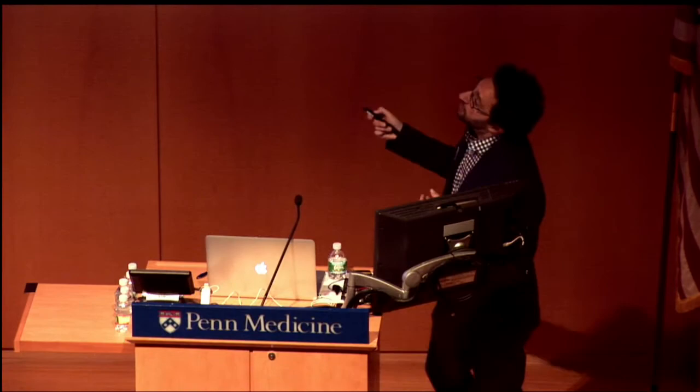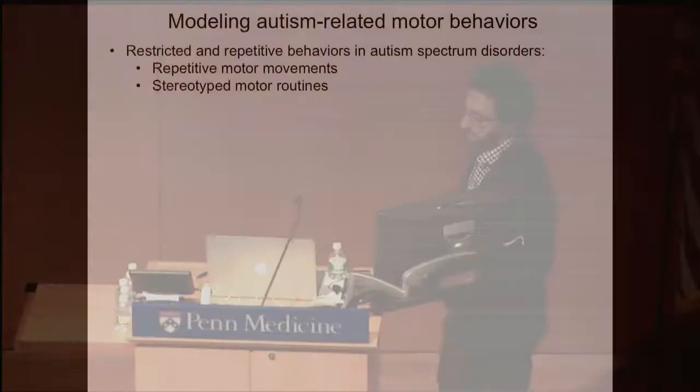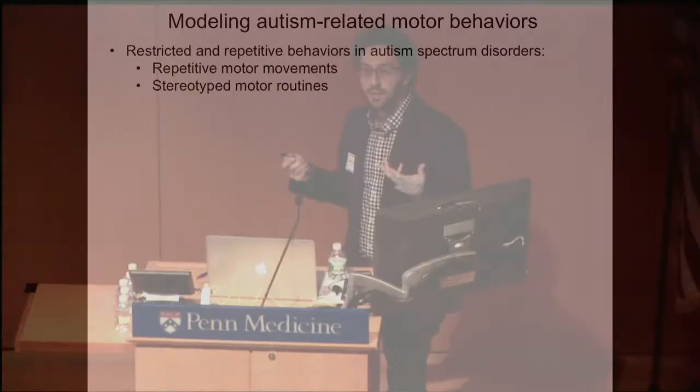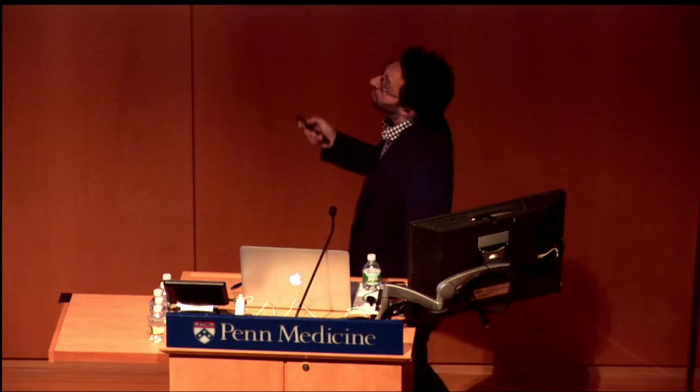There are two main symptomologies: abnormal motor behaviors and abnormal social function. The first one we wanted to look at was restricted and repetitive behaviors. We thought about motor learning — when you learn things like playing the piano or riding a bike, that process gets better and better over time, forming a normal motor stereotyped pattern. Maybe that's just perturbed in an autistic individual.